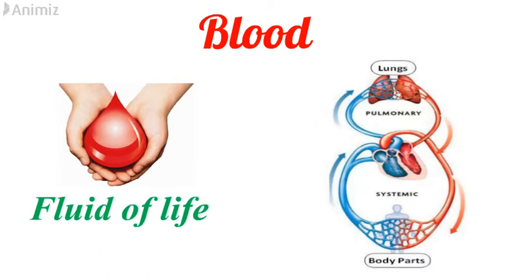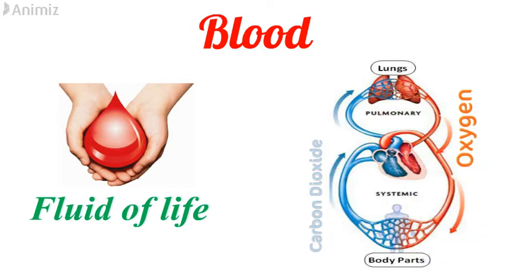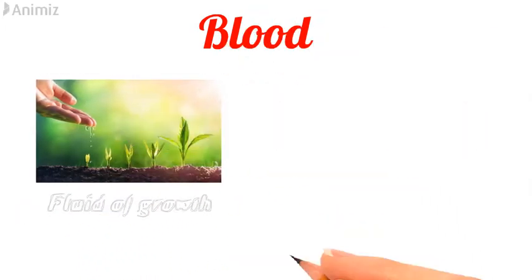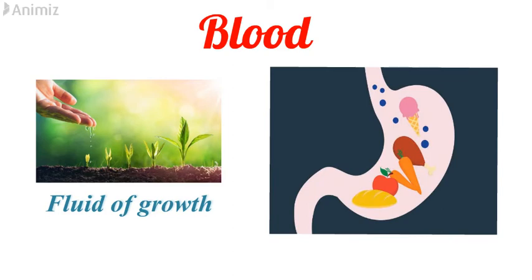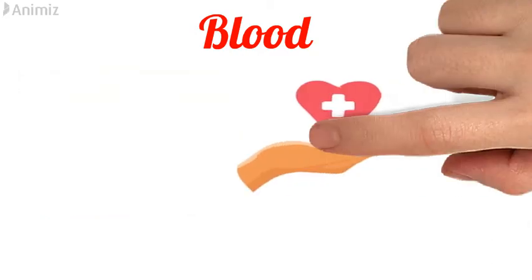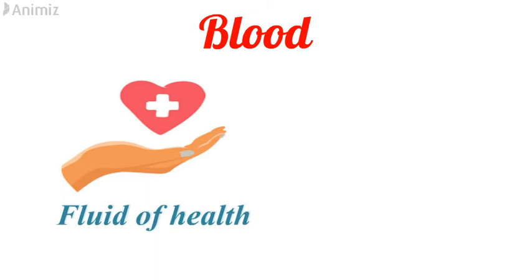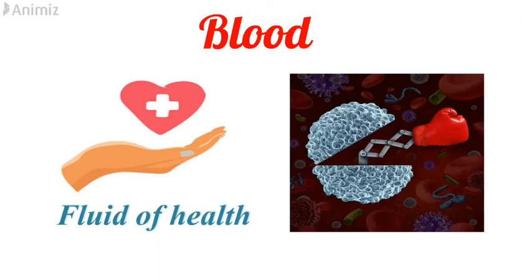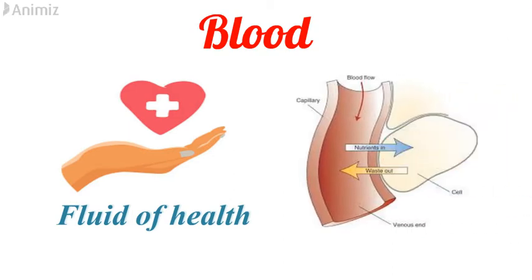Blood is called the fluid of life as it helps in transporting oxygen from lungs to the rest of the body and carbon dioxide from the rest of the body to the lungs. Blood is also called the fluid of growth as it helps in absorbing nutritive substances from the digestive system and transports them to each and every cell of the body, and also transports hormones from the endocrine glands to all the tissues of the body. Blood is also called the fluid of health as it protects the body against diseases and helps in getting rid of waste products by transporting them to the excretory organs.